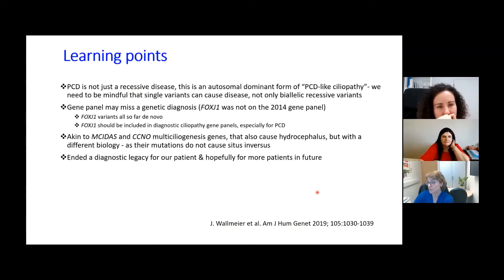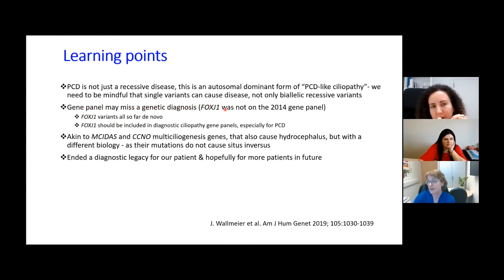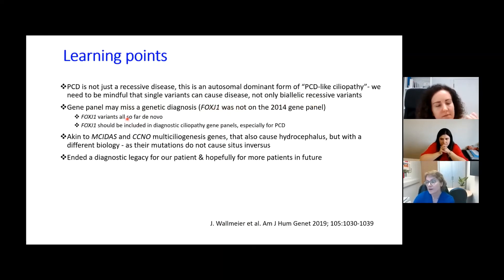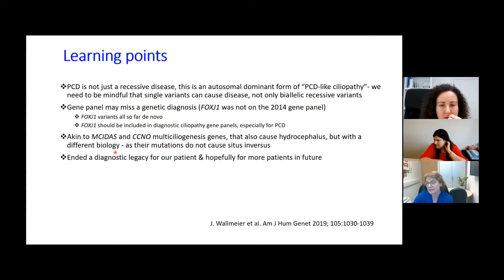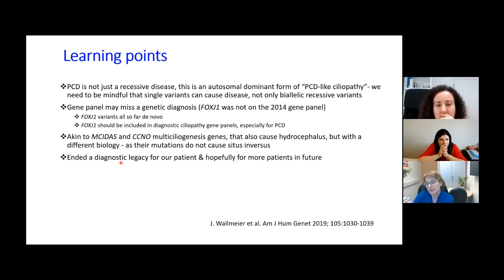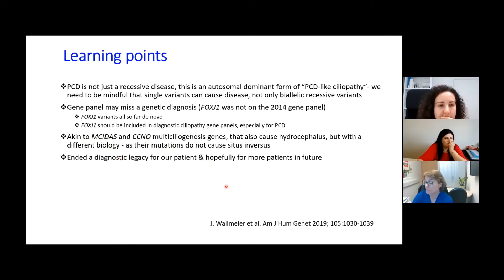We just need to be mindful that single heterozygous variants can also cause disease, not only biallelic recessive variants. A gene panel may miss a genetic diagnosis — FOXJ1 was simply not on our panel in 2014. All variants identified so far are de novo, making for interesting genetics. FOXJ1 has a slightly different biology from MCIDAS and CCNO, the two known multiciliogenesis genes. This hopefully resolves the diagnostic question for this patient and for more patients in the future.